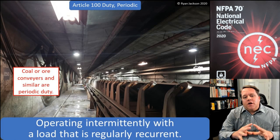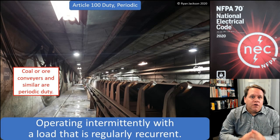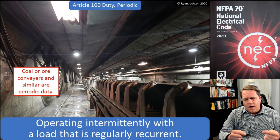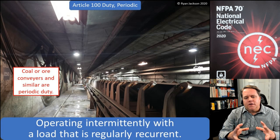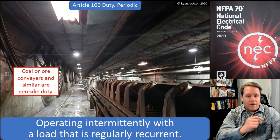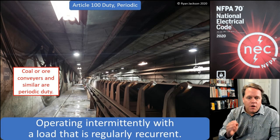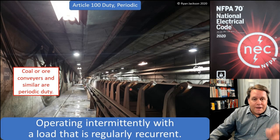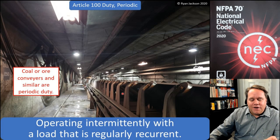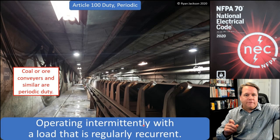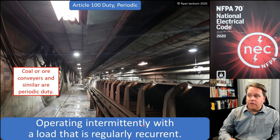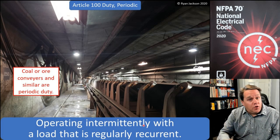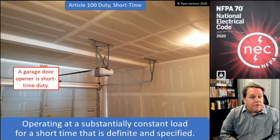Periodic duty means it operates intermittently with a load that is regularly recurrent. A coal conveyor is a great example — a conveyor belt at a coal-fired power plant. You load it up with coal, ship it from point A to point B, then shut it off. A few hours later you load it up again and ship it from point A to point B. That regularly recurring pattern is periodic duty.